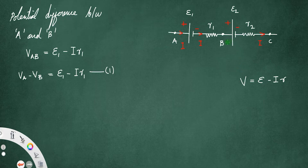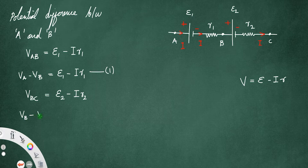Similarly, the potential difference between B and C — call that VBC — equals E2 minus IR2. And VBC equals VB minus VC, so VB minus VC equals E2 minus IR2. Let us call that equation number 2.